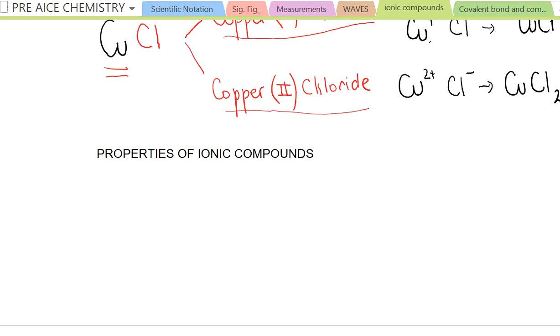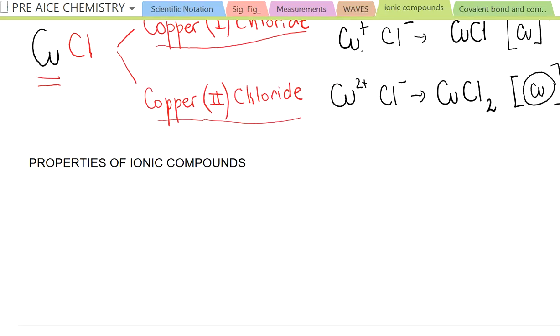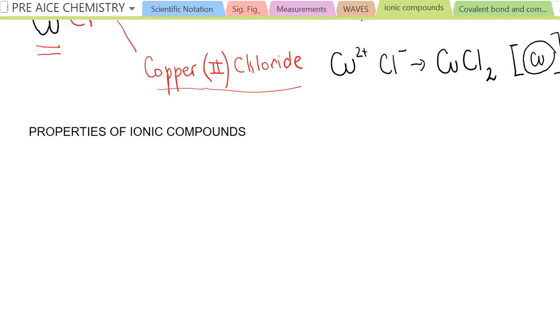Okay? Now, the things that we are going to cover now are the properties of ionic compounds. And this is just a list of things. So, what I'm going to do is to put the list of things that we should have. One of the things is the ionic compounds are solid at room temperature.